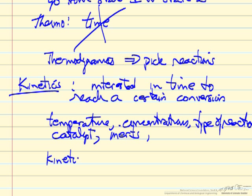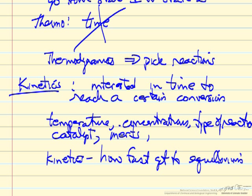So kinetics predicts how fast we get to equilibrium, because we're always aiming towards equilibrium.